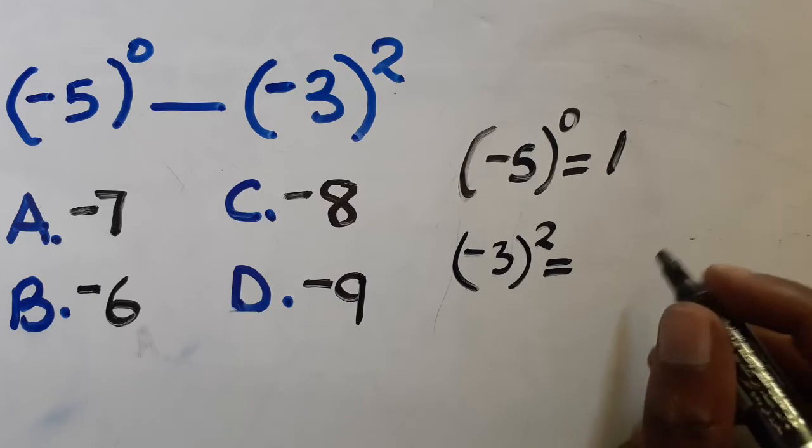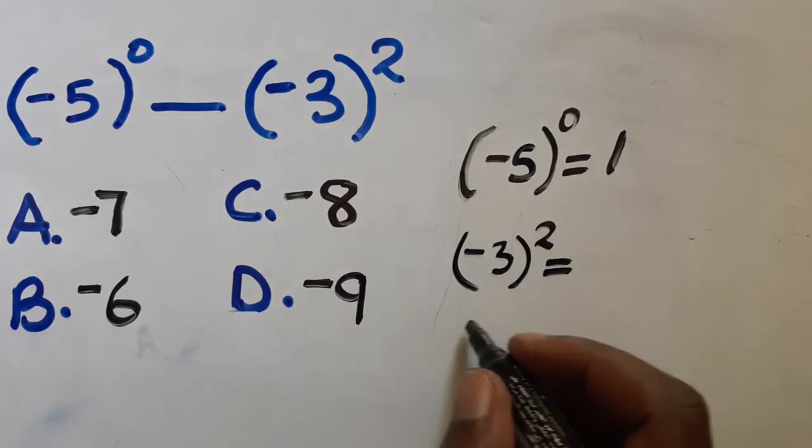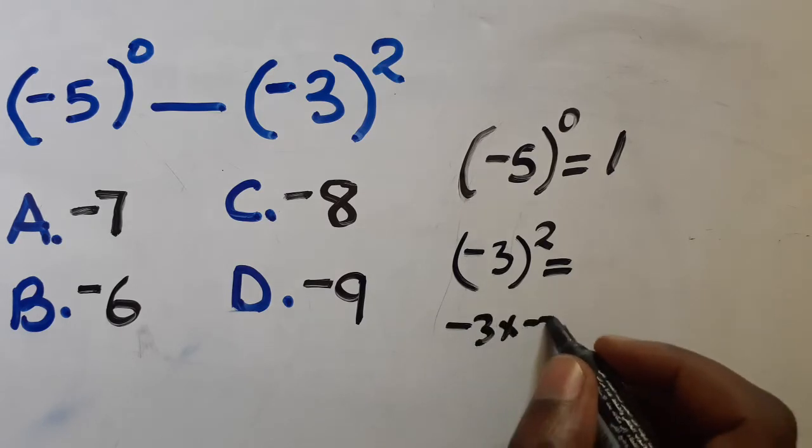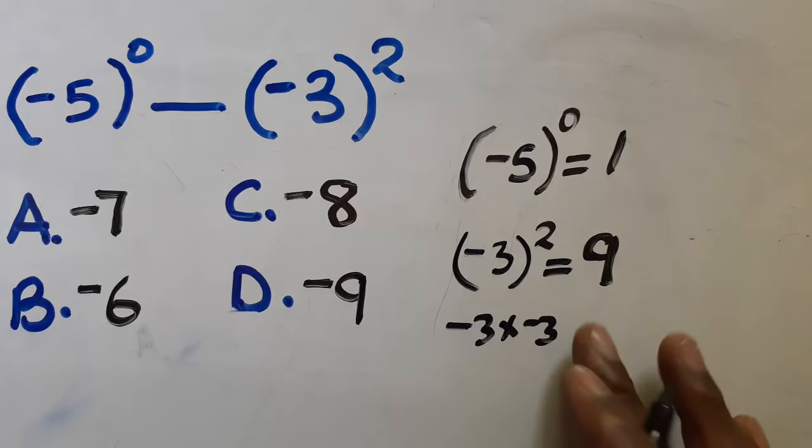Okay, and then this is the same as negative three multiplied by negative three and it will give us positive nine. All right.